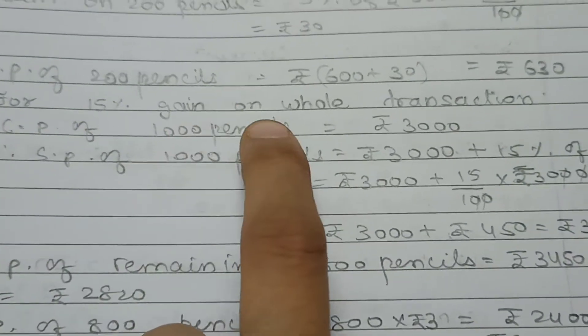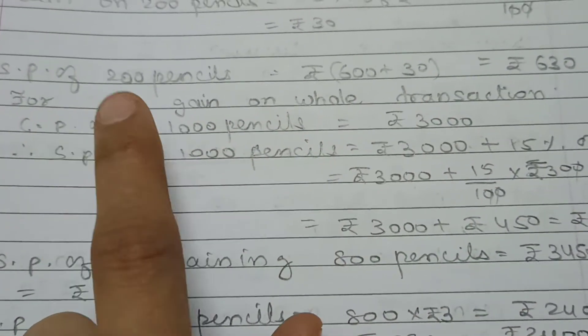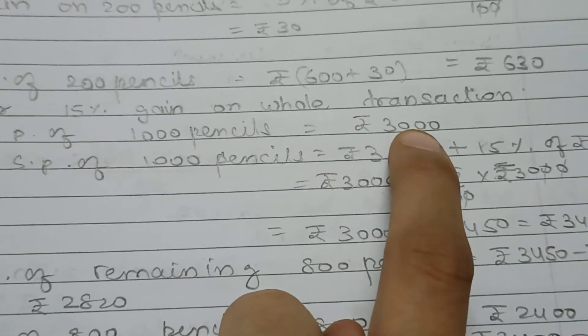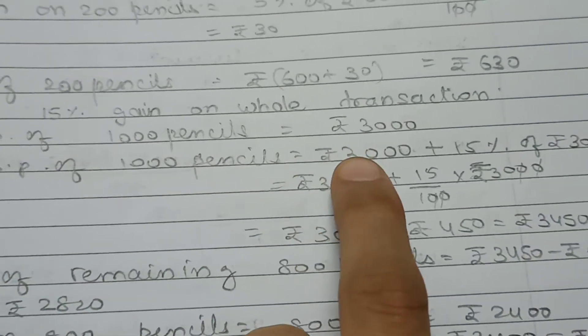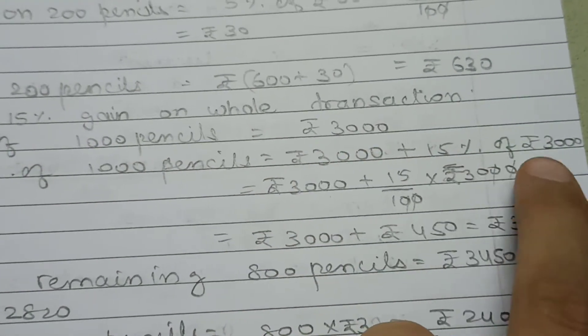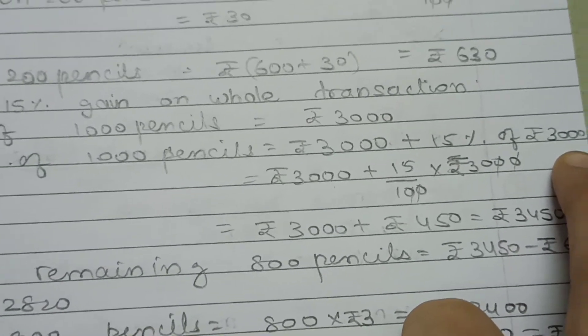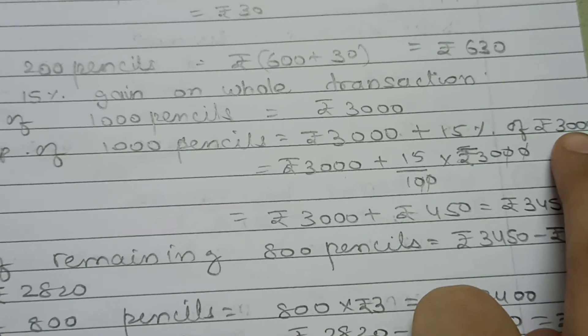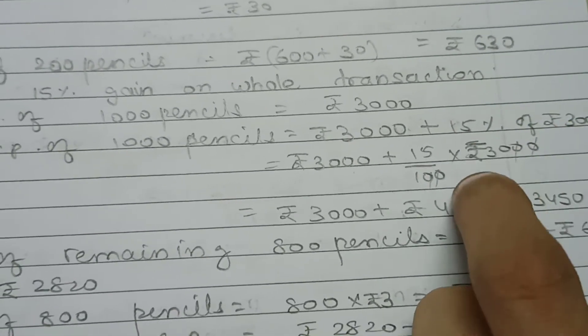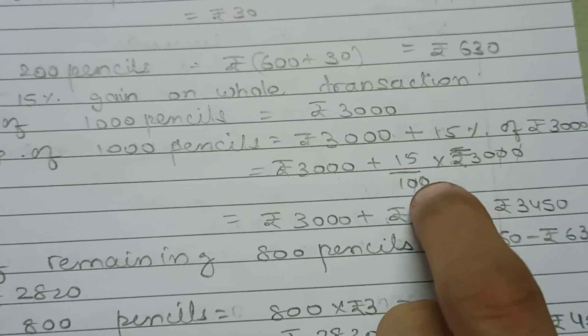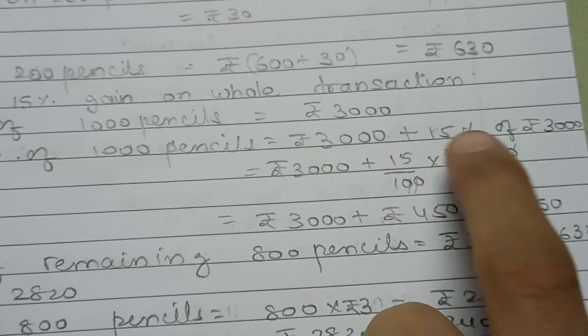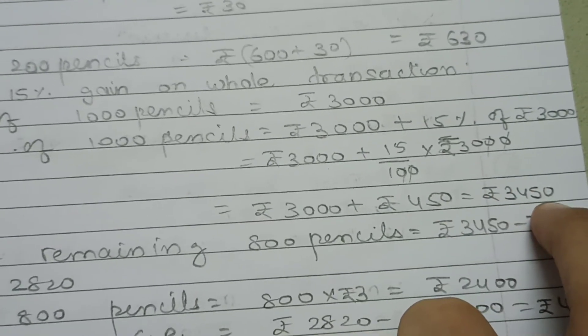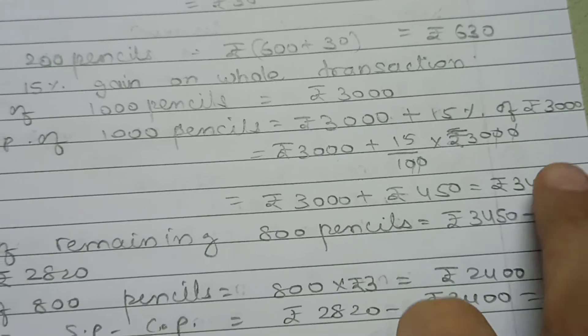For 15% gain on whole transaction, CP of 1000 pencils is 3000. SP of 1000 pencils should be 3000 plus 15% of 3000, which is 450. So, selling price should be 3450.